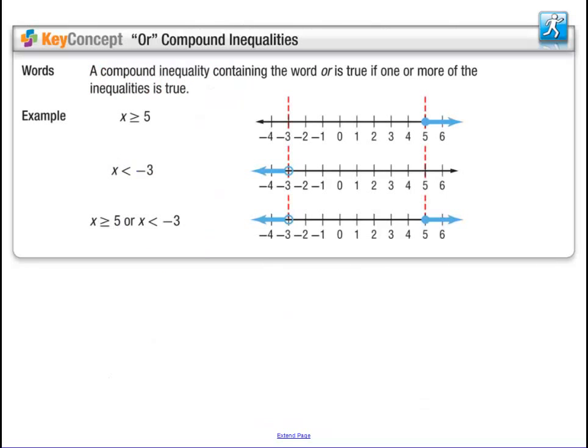Now, an 'or' means that one of them is true. So x is greater than 5 or x is less than 3. Actually, a lot of teachers like to think about them as like oars on the boat. They're going opposite directions.